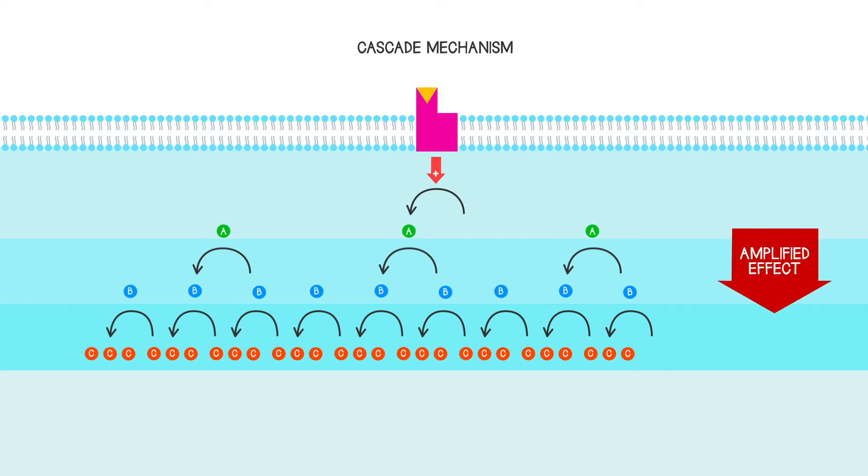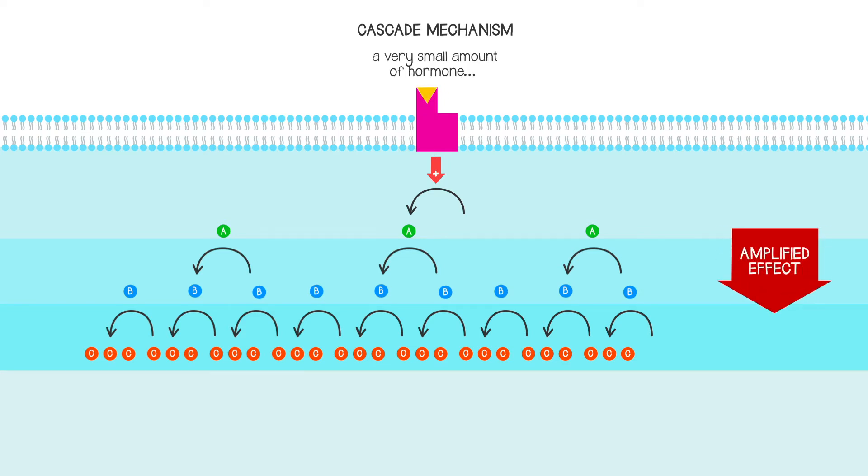And that means that you get an amplified effect, such that only a very small amount of hormone in the blood can go on to lead to a very significant change in cell function.